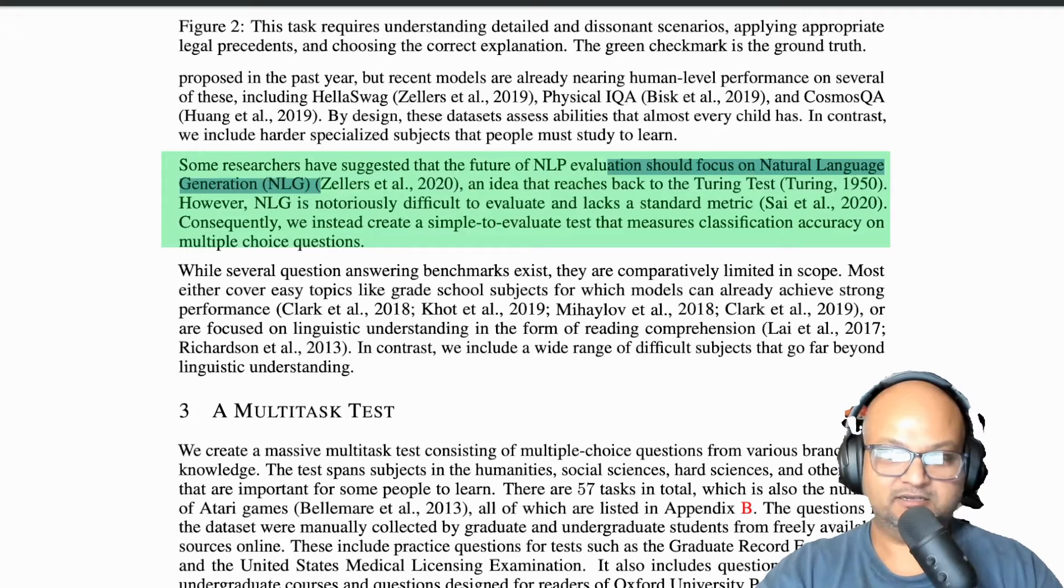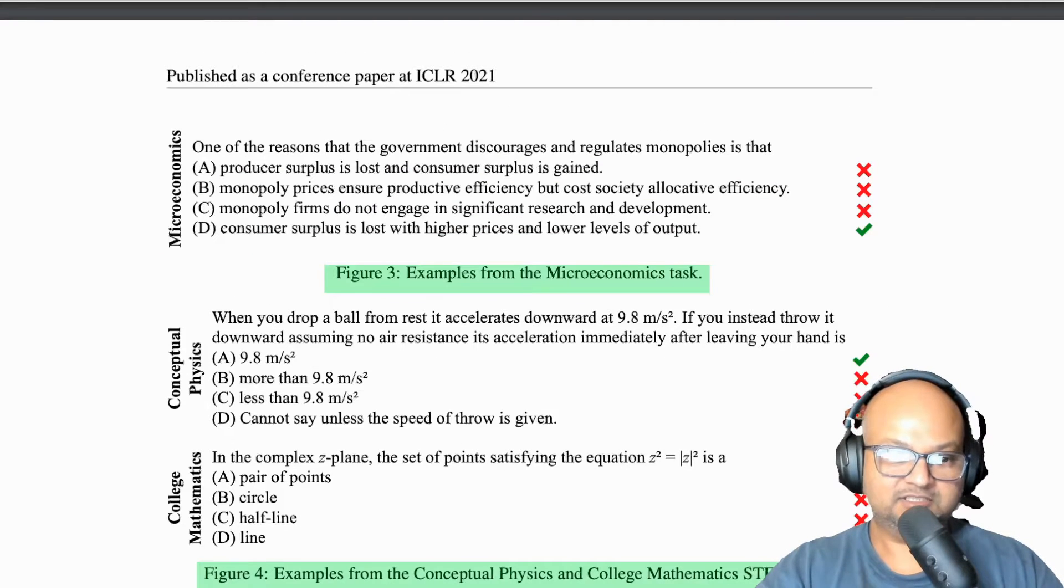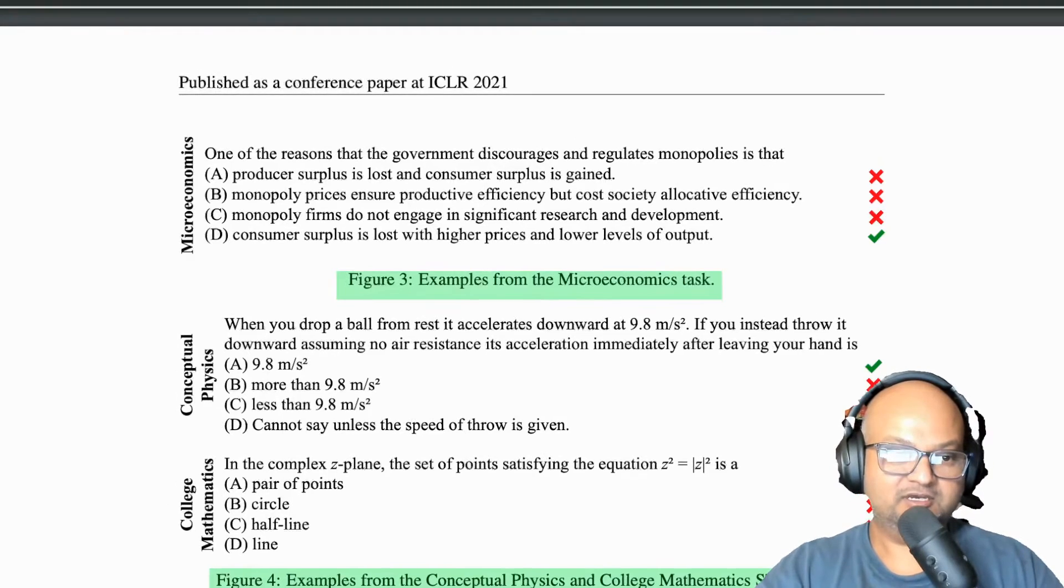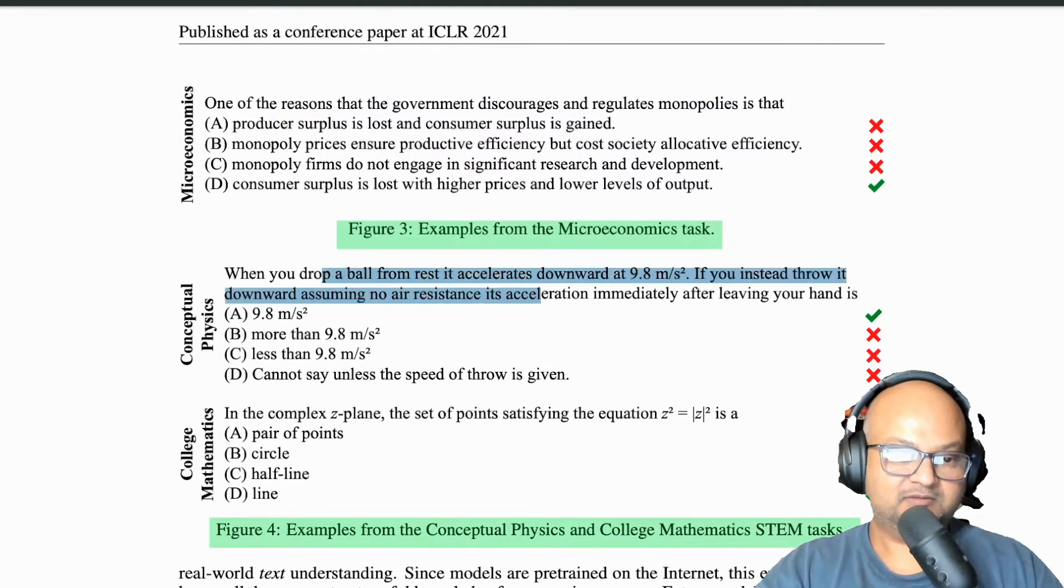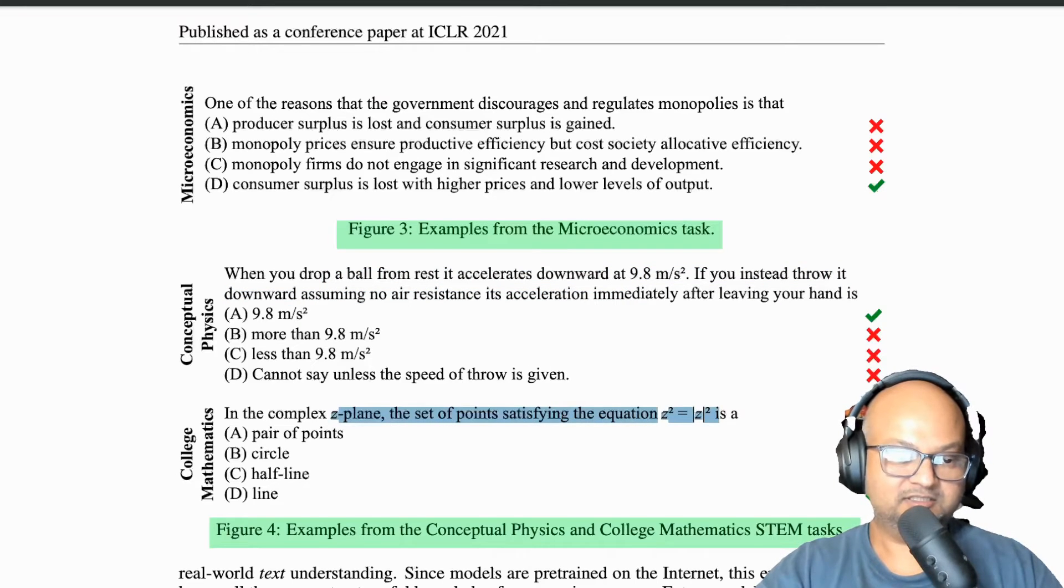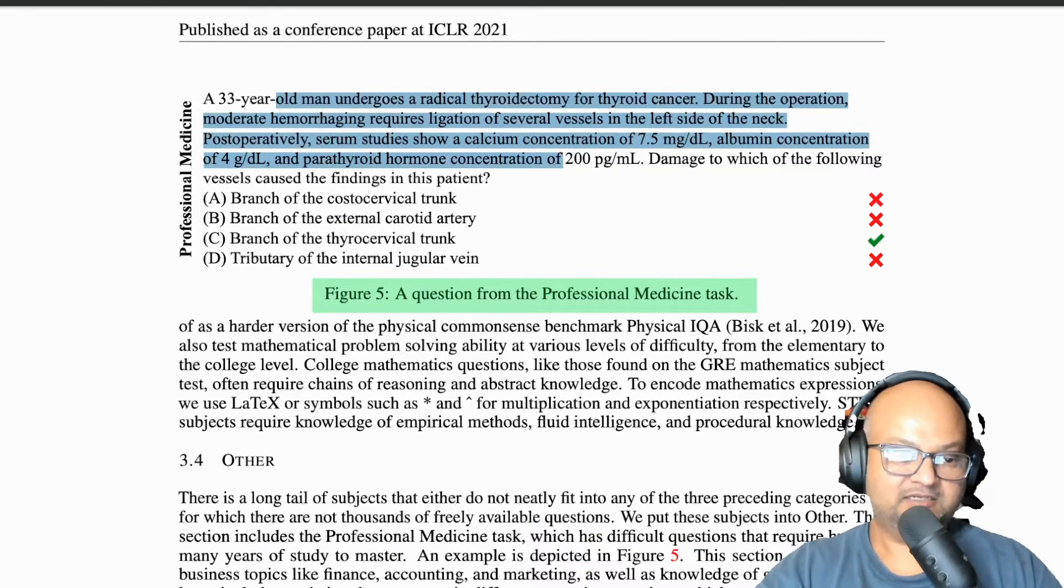Before we get into the results, let's look at some examples of the kinds of questions they're asking in this benchmark. Here you see one related to microeconomics, there's some college physics, there's some complex numbers, there's some questions related to medicine. So really it's trying to cover a very broad variety of subject matter.